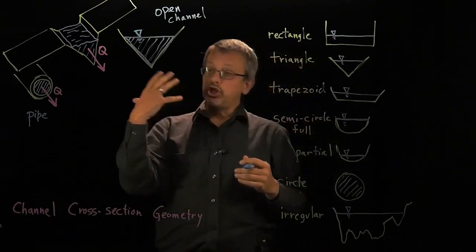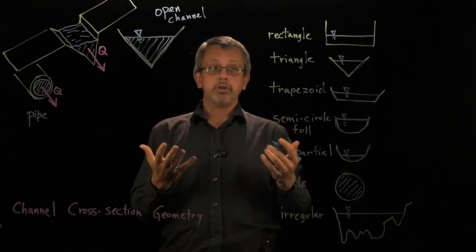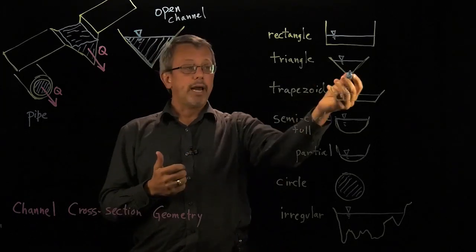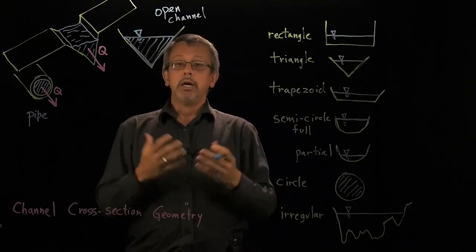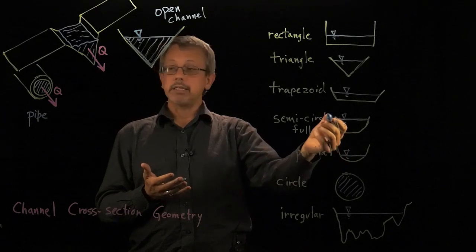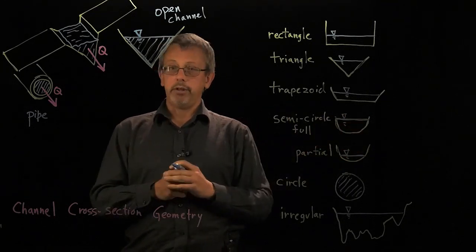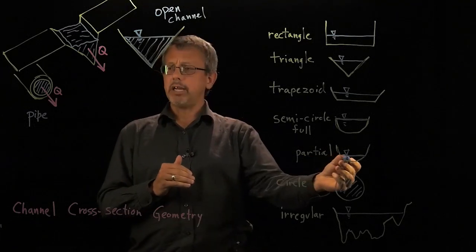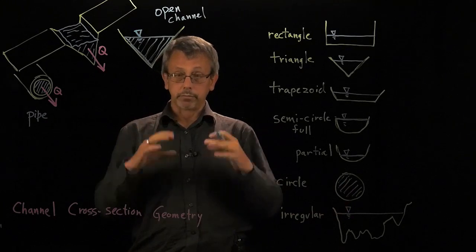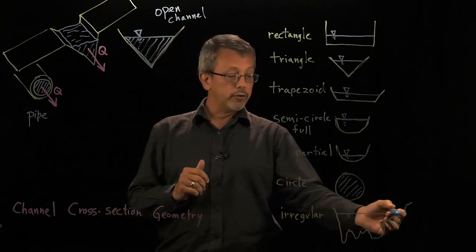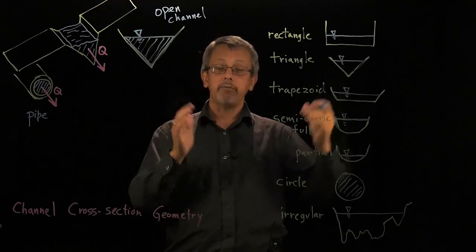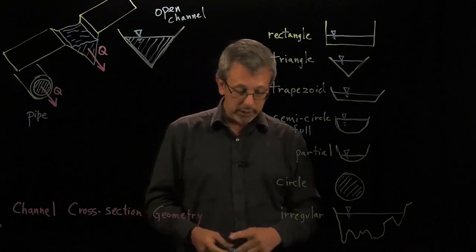There are many different types and shapes of channel cross-sections. Standard shapes include: rectangular, like a flume with box-like sides; triangular, more typical for naturally cut streams; trapezoidal, for wider streams; semicircular, assuming the depth equals the radius when full; circular, the typical cross-sectional shape for pipes; and irregular shapes, where actual field measurements give a more complex cross-section than these idealized geometries.